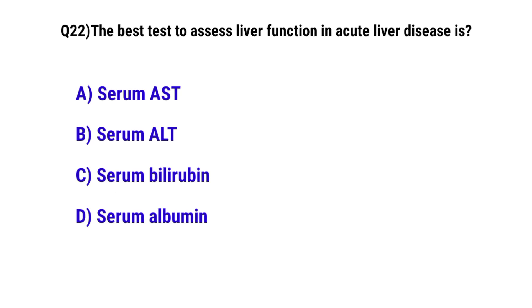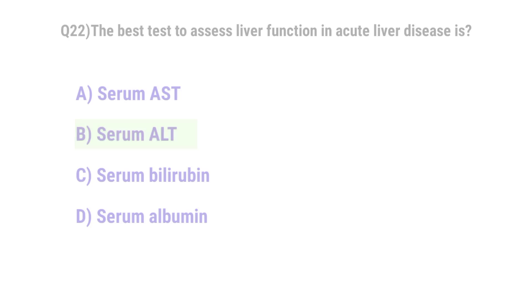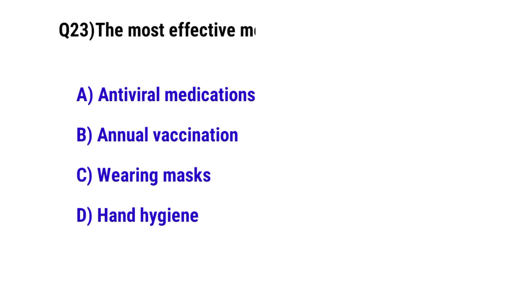Question No. 22: The best test to assess liver function in acute liver disease is — the correct option is B: serum ALT.